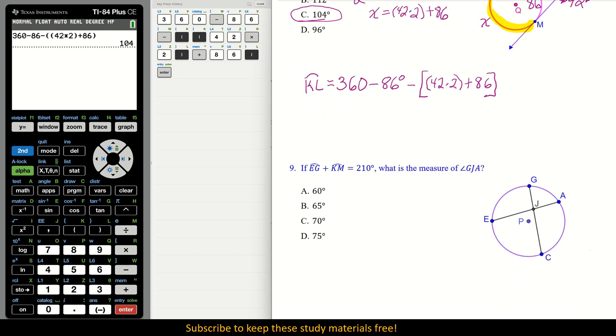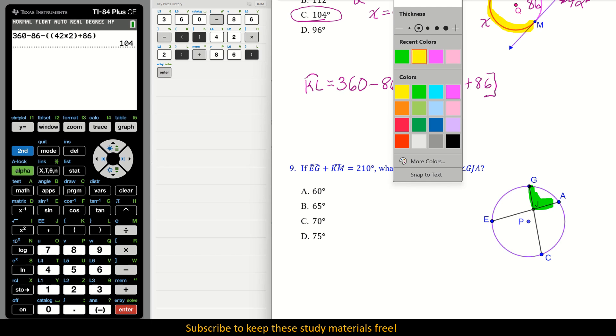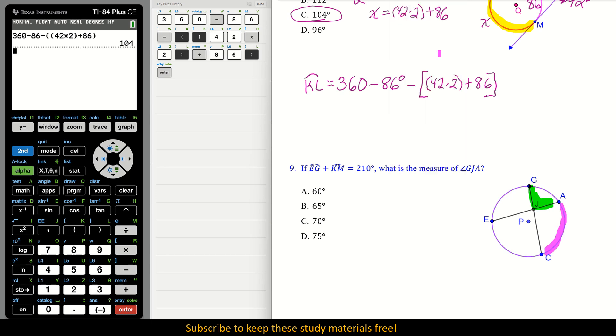Let's go to number 9. So with number 9, it says if the arc EG plus KM equals 210 degrees, what is the measure of the angle GJA? It's one sentence, but there was a lot in that sentence. So what are we looking for in the end? We are looking for they want that angle. So let's highlight. It'll be this angle right here. That's what they're really wanting associated with that arc. Now let's change our highlighter here. What are they giving us? They're giving us these two arcs.